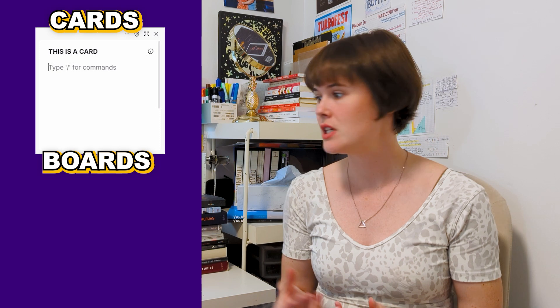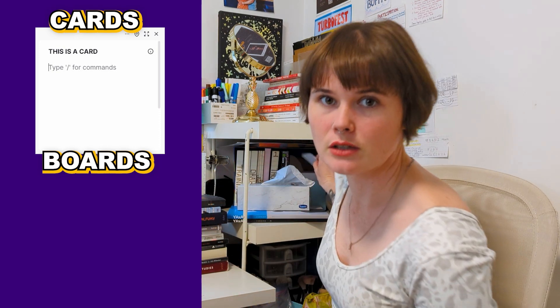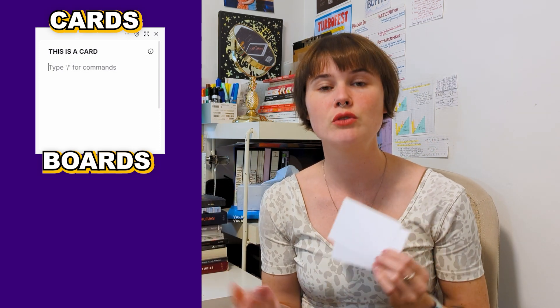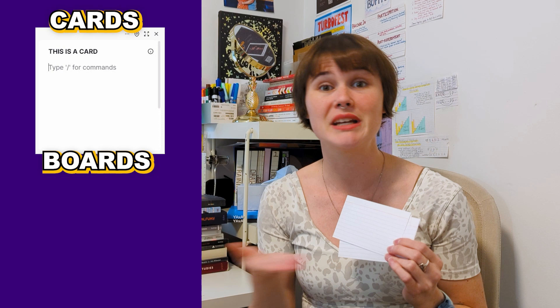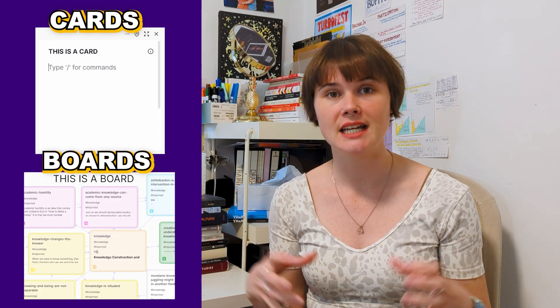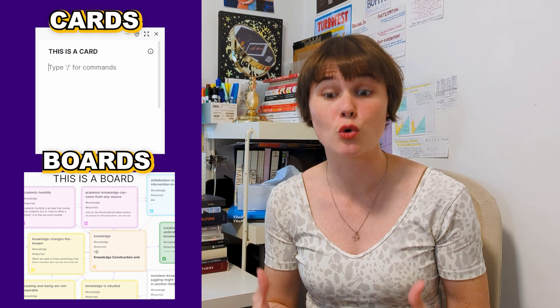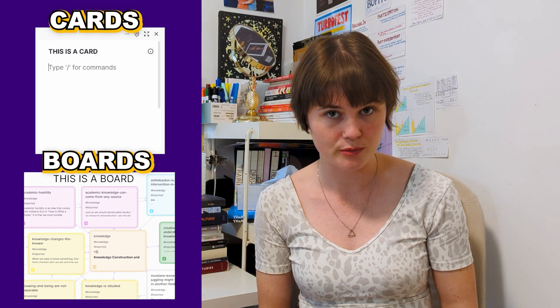In Scrintle there are two container types: there are cards and there are boards. Cards are the smallest unit within Scrintle — you can think of these like literal cards, like little cue cards or pieces of paper. You can write your notes on these cards, but because this is digital you can also embed links, PDFs, or images. Boards, on the other hand, are containers for your cards to be organized within however you'd like.